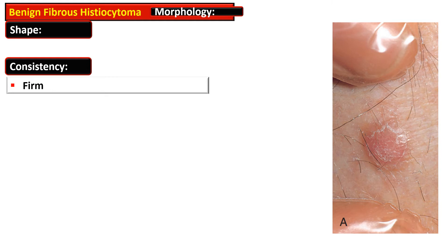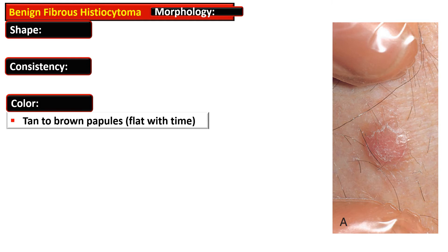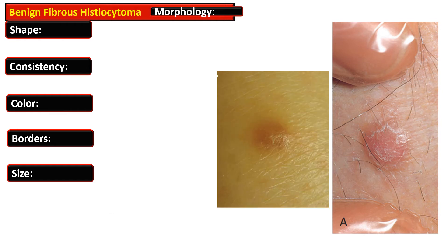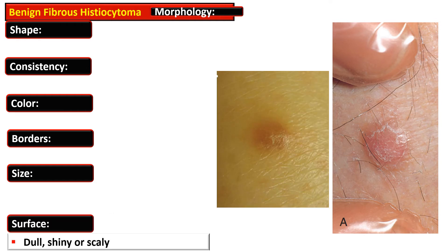Morphologically, dermatofibromas are dome-shaped papules that flatten over time. They are firm in consistency and tend to be tan to brown. The borders are ill-defined and the lesion is less than one centimeter in diameter, ranging from three to ten millimeters. Rarely exceeding five millimeters, active proliferative lesions may increase to several centimeters. The surface is dull, shiny, or scaly.